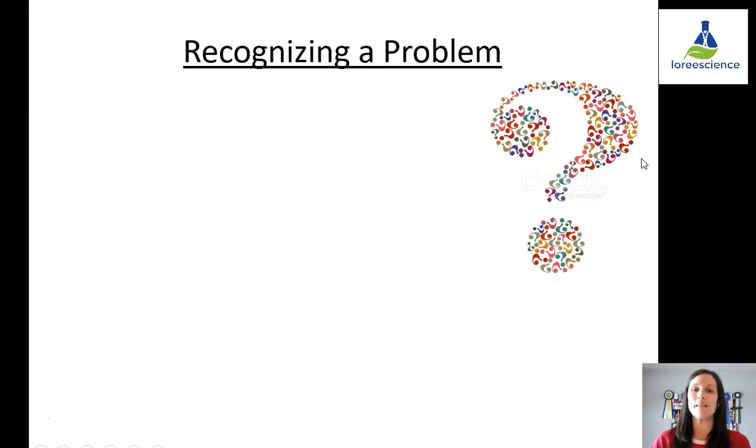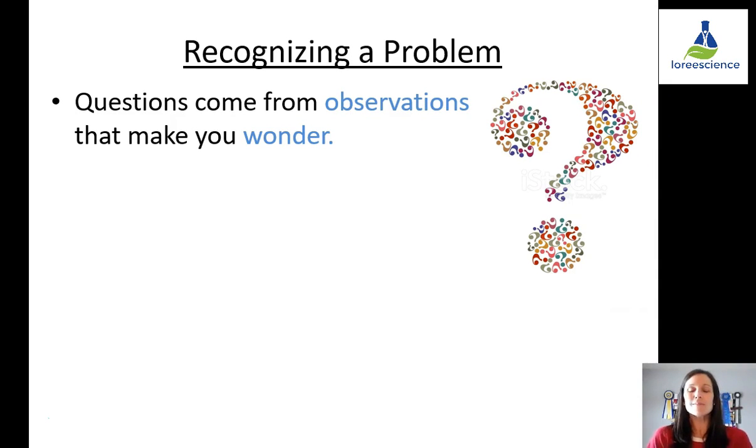So how do scientists recognize a problem? Well, they look at the world around them. The questions that are asked come from observations that make you wonder, make you wonder why something happens or how something happens. But basically, if you look at the world around you, you're going to start to ask questions or recognize problems.